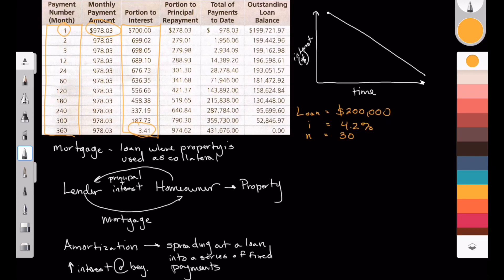And we've already calculated our payment. Our payment, represented by P, is going to be $978.03.